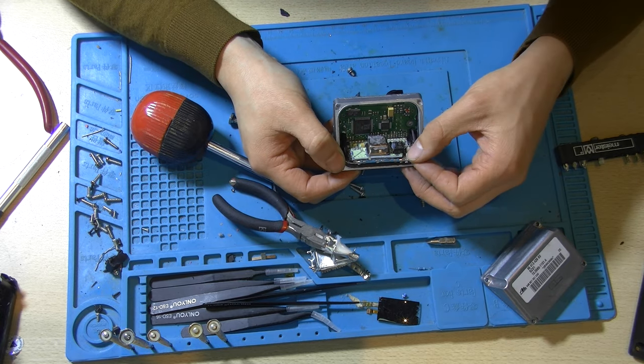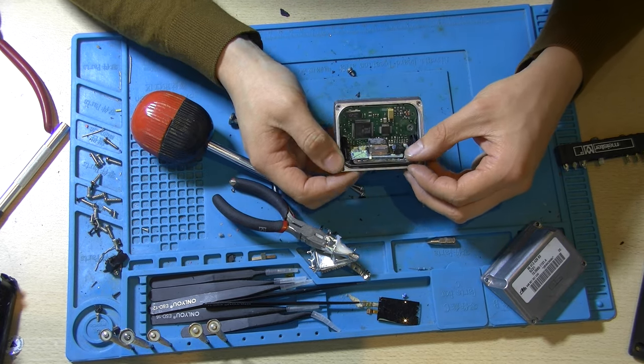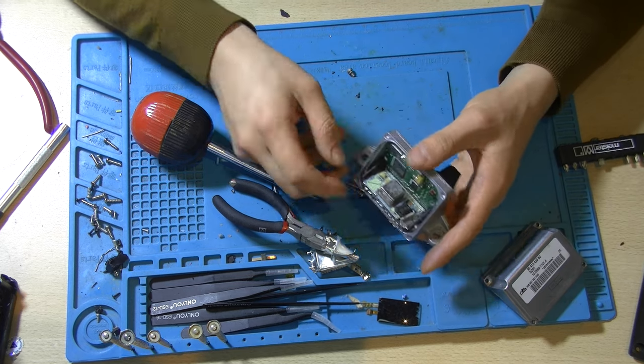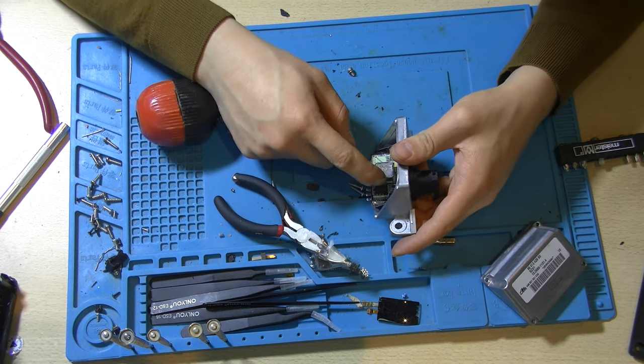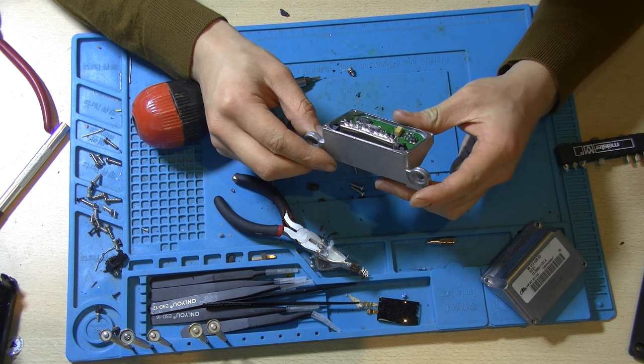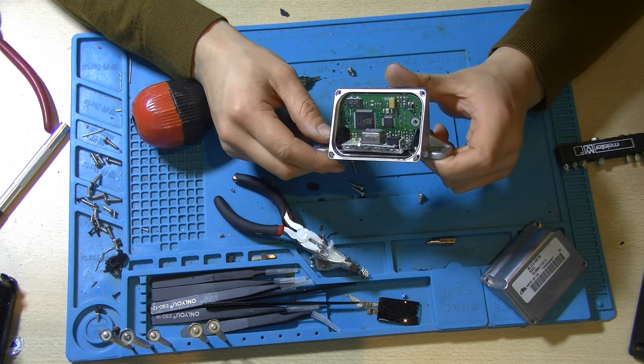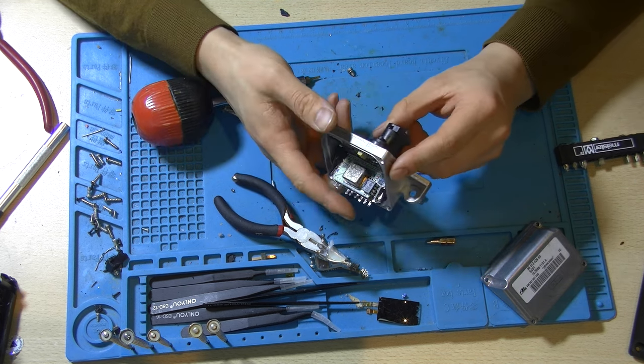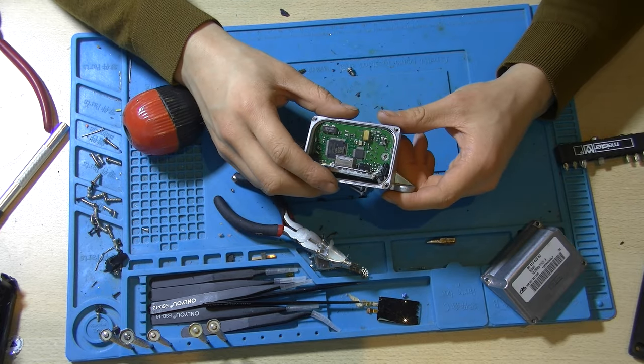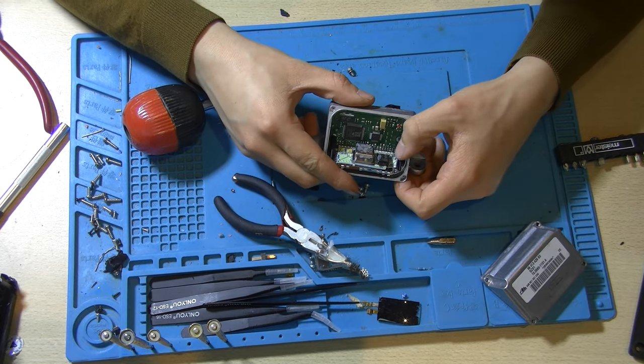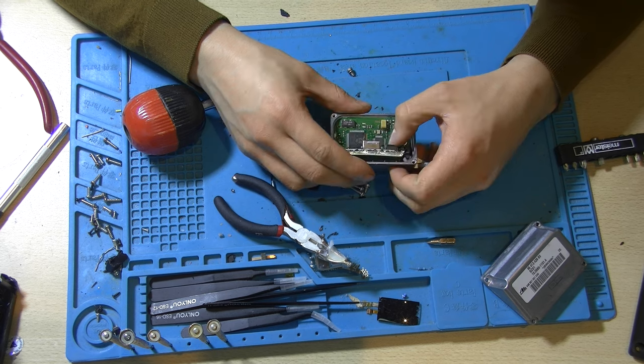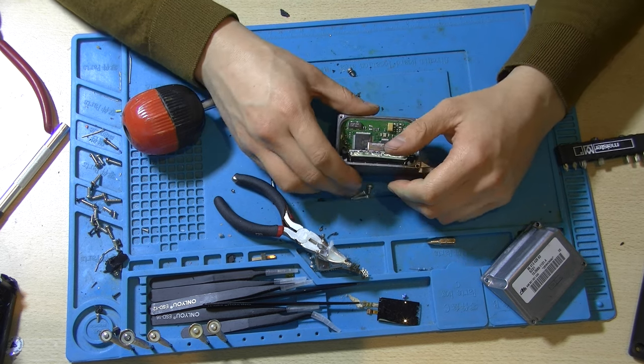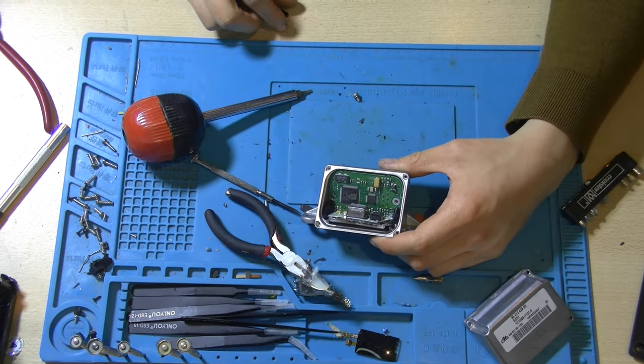Could this be another accelerometer? Because there is a label on here that states the front of the device. I think that this might also be an airbag control module. Because why would you label the front of the device? Oh wow. I wasn't expecting that.